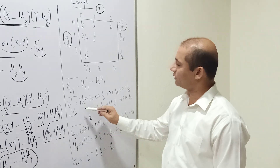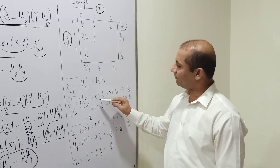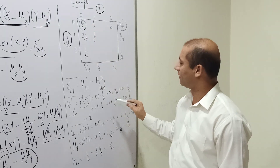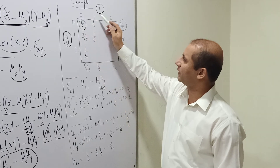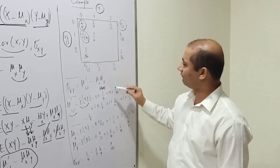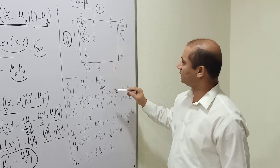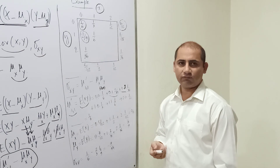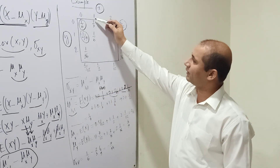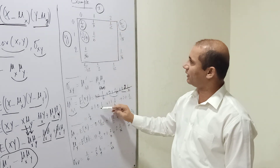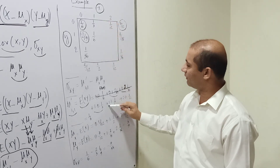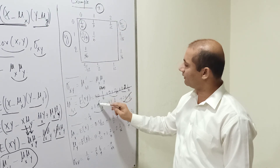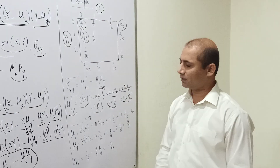We compute mu_{1,1}' = E[XY] by summing x*y*f(x,y) over all entries. Since any term with x=0 or y=0 vanishes, the only nonzero contribution is at x=1, y=1, where the probability is 1/6. So mu_{1,1}' = 1 * 1 * (1/6) = 1/6.